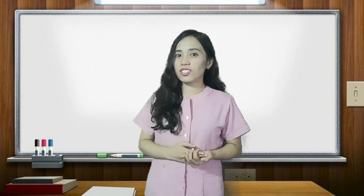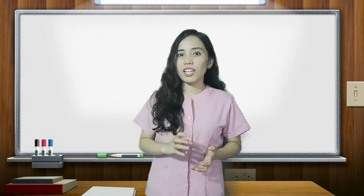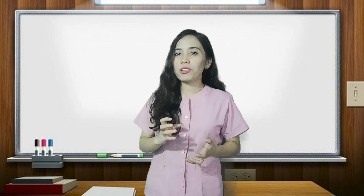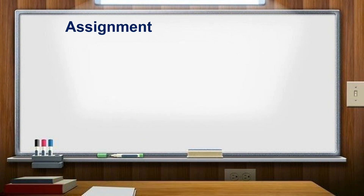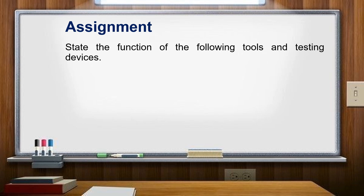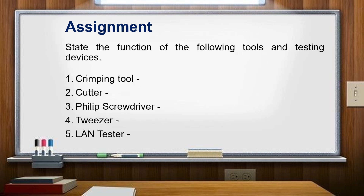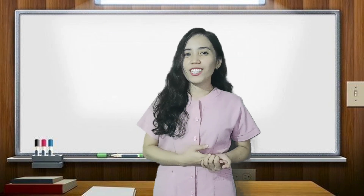Did you get all the correct answers? If yes, that's good to know. If not, you may read your module again or watch this video lesson again. For your additional activity or assignment, state the function of the following tools and testing devices: Number 1: crimping tool. Number 2: cutter. Number 3: Phillips screwdriver. Number 4: tweezers. And number 5: LAN tester. And that will be all for today. See you in our next topic. Bye bye!